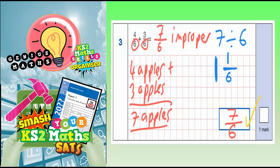So 7 sixths is correct, or 1 and 1 sixth is also correct. Either of those two answers would get you the mark. They both mean the same thing.